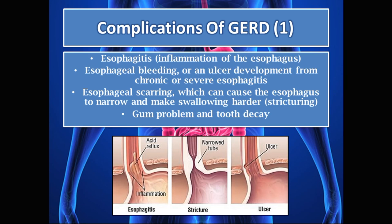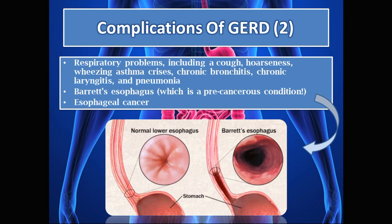What are the complications of GERD? That rushing acidic content into the esophagus causes damage and irritation to the lining. We have esophagitis, which is inflammation of the esophagus; esophageal bleeding or ulcer development from chronic or severe esophagitis; and esophageal scarring, which can cause the esophagus to narrow and make swallowing harder — called stricturing for medical students.